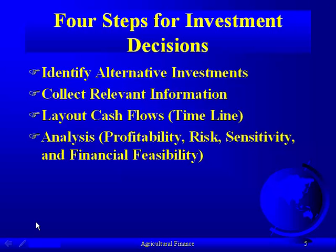If you calculate a net present value, it's based on some assumption about the future. If somebody tells me they know with certainty the price of corn in three, four, or five years, they're emphatically wrong. We also haven't said anything about debt — how does our ability to borrow money affect our decision? Right now the focus is on laying out the problem and calculating the net present value, and then we'll add the other dimensions.